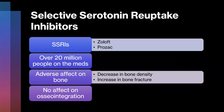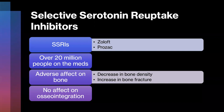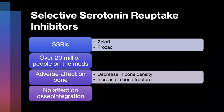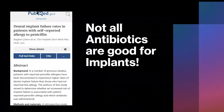The next major drug group is SSRIs — selective serotonin reuptake inhibitors — very common, with about 20 million Americans on medications like Zoloft and Prozac. They do affect bone metabolism, decreasing bone density and increasing fracture risk. However, studies showed there was no effect on osseointegration. So patients on these medications don't need to be alarmed about a poor outcome with dental implants.